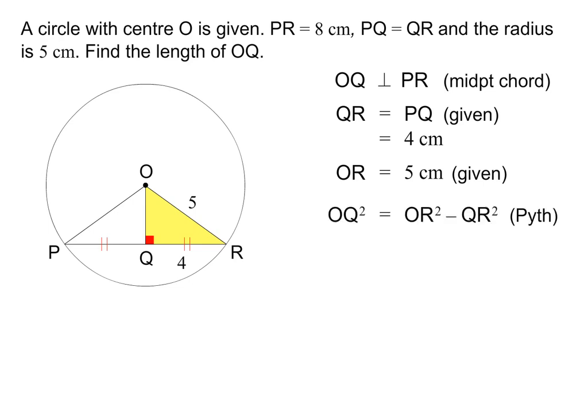In other words, OQ squared is equal to OR squared minus QR squared. OQ squared is therefore equal to 5 squared minus 4 squared, which is equal to 9. OQ is therefore equal to 3 cm. Please pause the lesson to check my working.